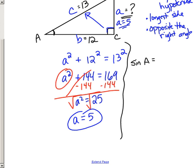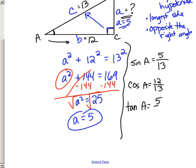Now that a equals 5, we can find the trig functions. The sine of angle A is the side opposite A over the hypotenuse. The cosine of A is the side adjacent to A over the hypotenuse. The tangent of A is the opposite over the adjacent. Sometimes you'll need to use the Pythagorean theorem first, and then you're set up to use the trig definitions.